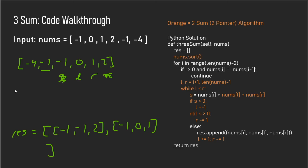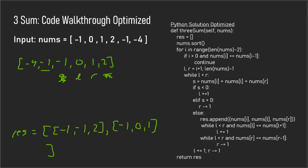If you keep continuing with this algorithm, you'll find there are no other combinations that add up to zero, so we return the results array. A quick optimization: you can add a loop that checks for duplicate numbers — if we have a large streak of duplicate negative ones, we can skip the left pointer past that last negative one. The same concept applies to the right pointer, saving compute power and runtime.